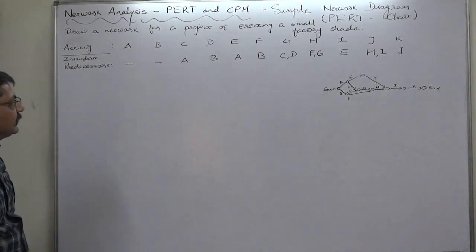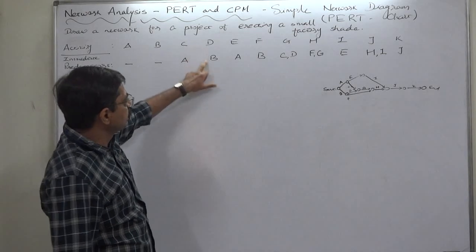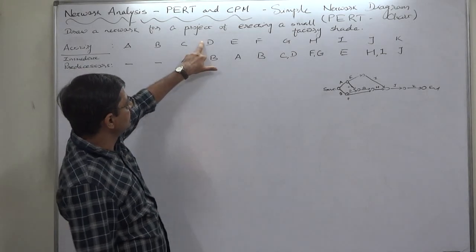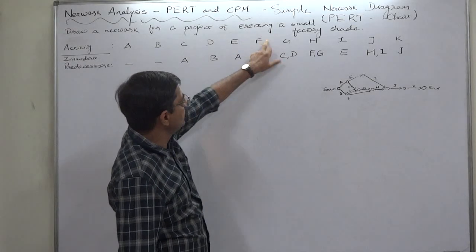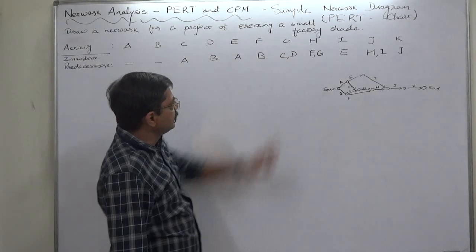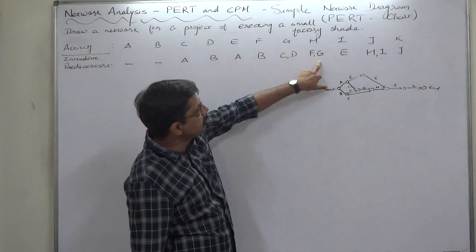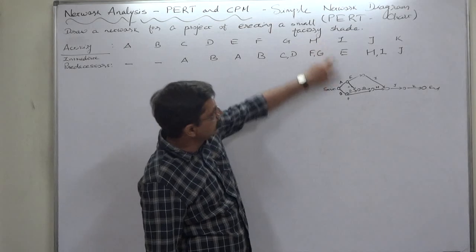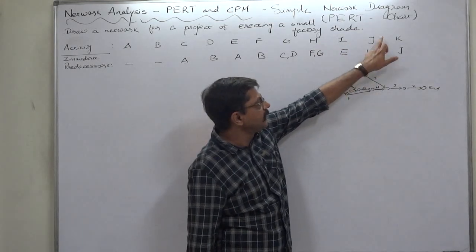B is predecessor of D. A is predecessor of E. B is predecessor of F. C and D both are predecessors of G. F and G both are predecessors of H. E alone is predecessor of I. H and I both are predecessors of J, and J is predecessor of K.